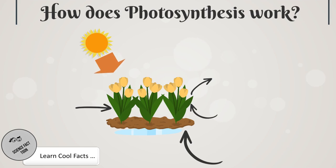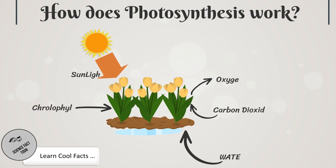How does photosynthesis work? Plants require four main ingredients for photosynthesis. One: light from the sun. Two: water and minerals absorbed through roots from the soil.